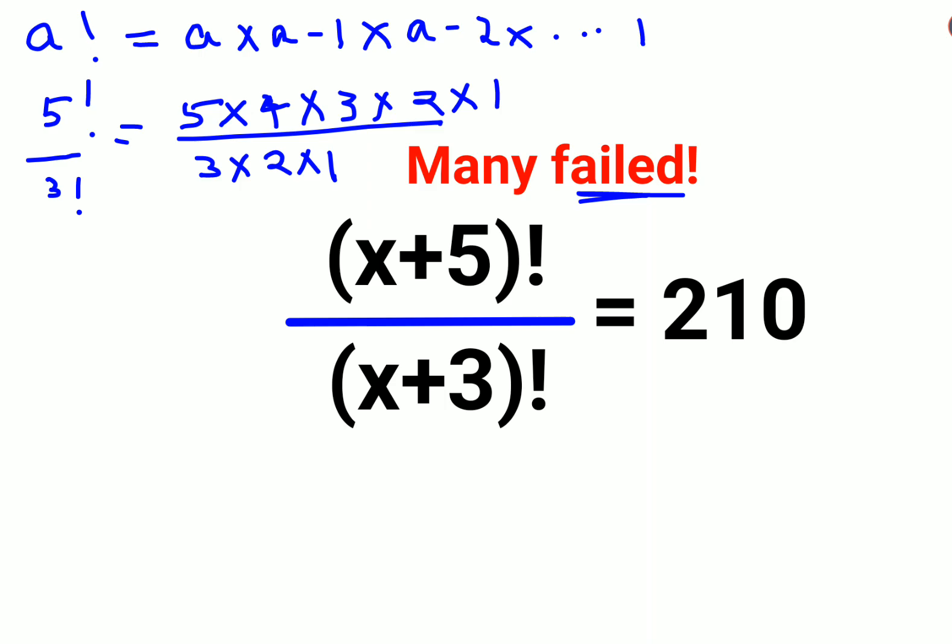Now instead of 5 factorial, I can directly write this as 5 into 4 into 3 factorial. And this entire expansion, I can just write as 3 factorial because this eventually gets cancelled.